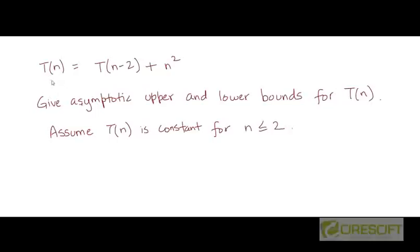Let's say that you are given this recurrence to solve: T(n) = T(n-2) + n². We want to solve for the asymptotic complexity of T(n). We want to get both upper bounds and lower bounds — that is, we want to express T(n) as Big-O of some function and Big-Omega of some function. Preferably we would like our bound to be a tight bound. As always, T(n) is constant for small values of n, say less than or equal to 2.